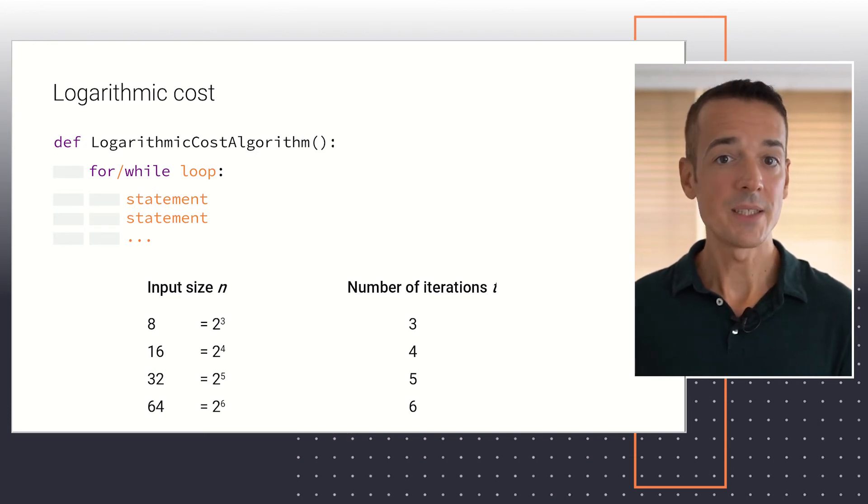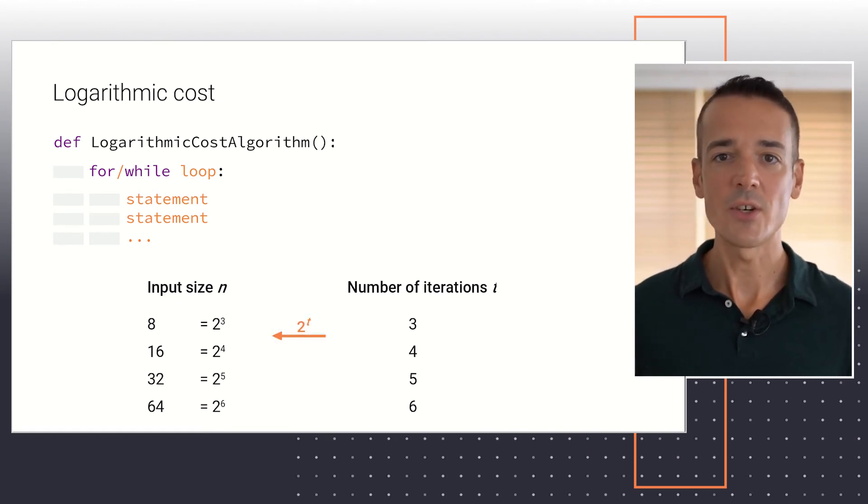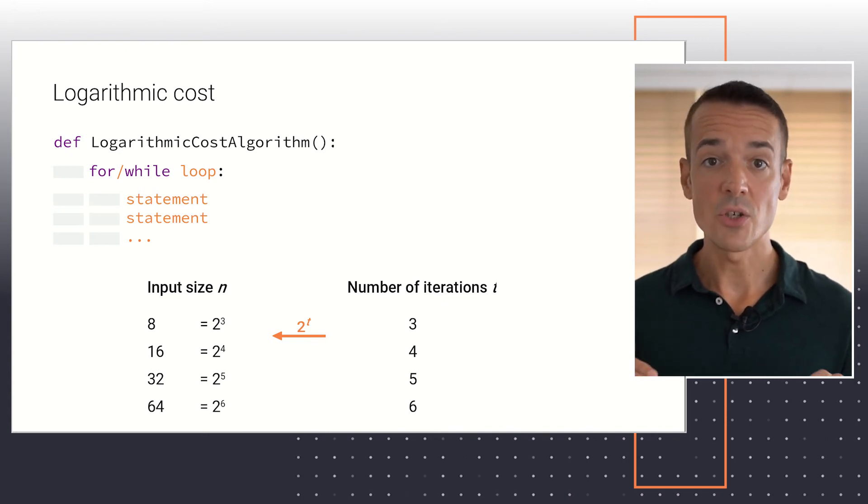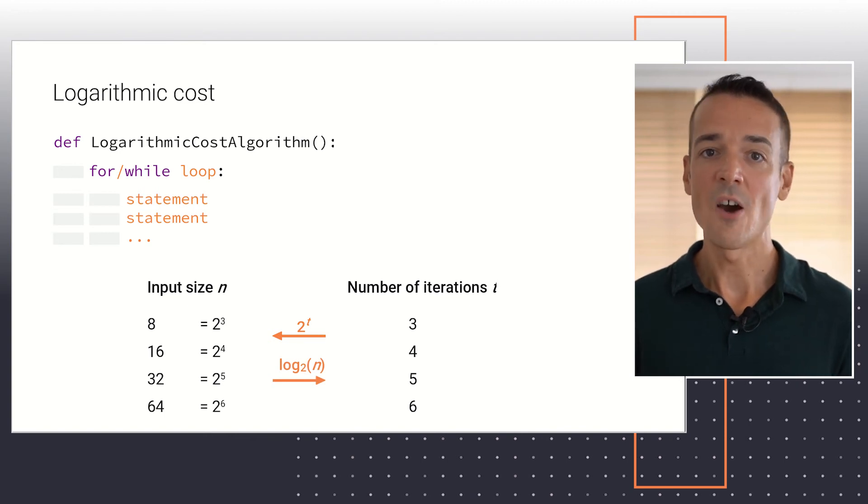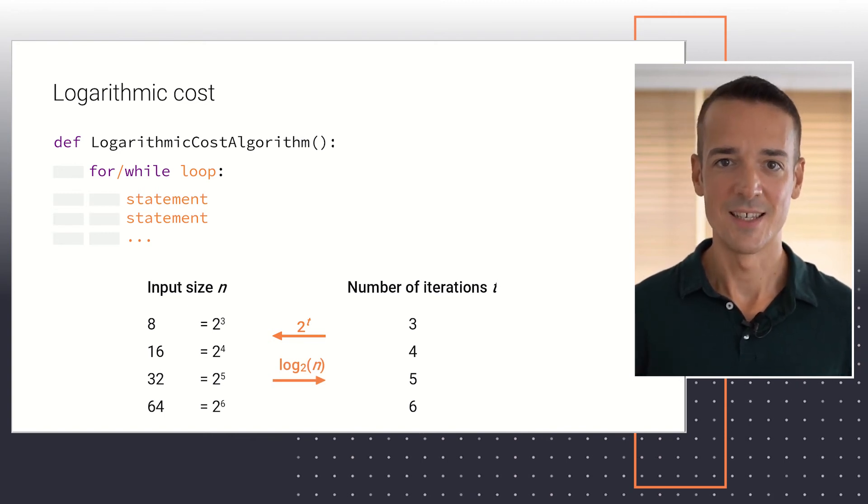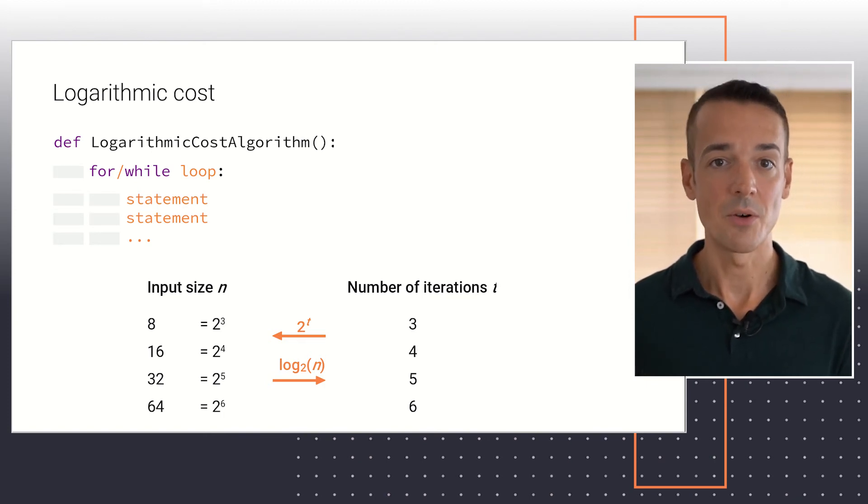In this type of algorithms, the problem size n is equal to 2 to the t, where t is the number of iterations executed in the loop. Or in other words, the number of iterations t is equal to the logarithm in base 2 of the problem size n. You may remember from your math classes that the logarithm is the reverse operation from the exponentiation. We can say that the loop runs log base 2 of n iterations.